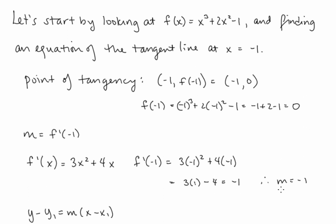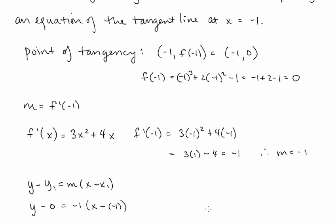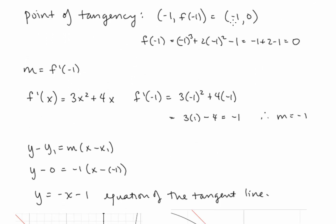So our slope for the tangent line is equal to negative 1. Our point is negative 1 comma 0, our slope is negative 1, and so the equation for our tangent line is y equals negative x minus 1.